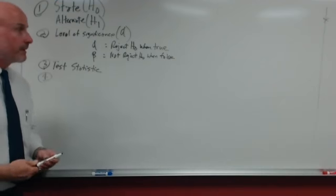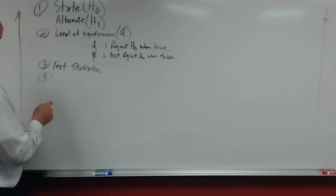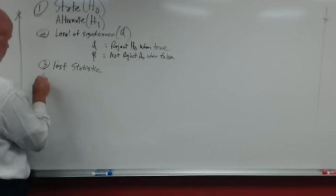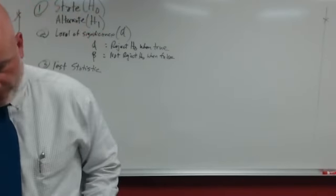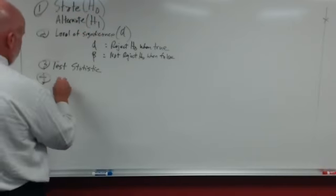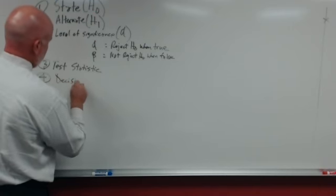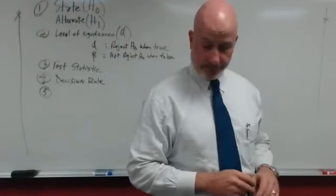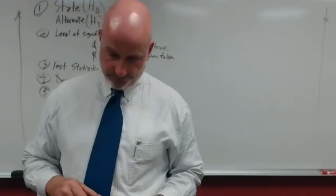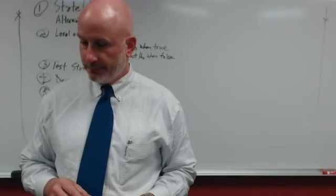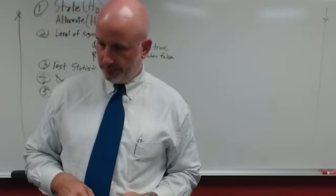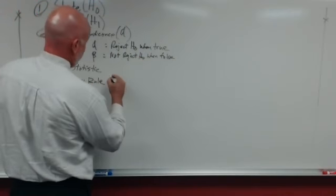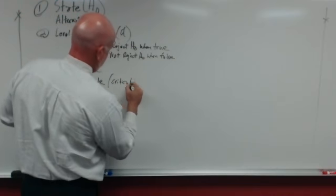Step four: formulate the decision rule. The decision rule defines the conditions in which the null hypothesis is rejected and is not rejected. This is where you introduce something called the critical value.